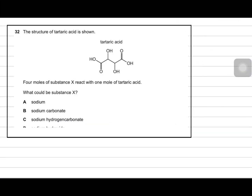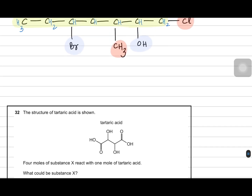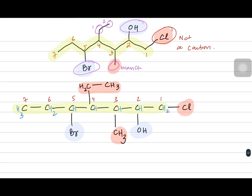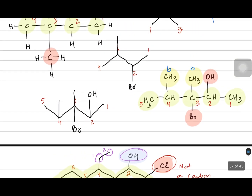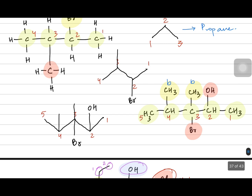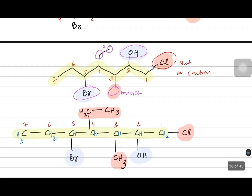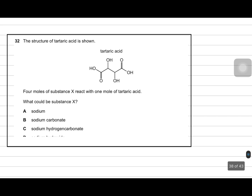Hey everyone! In the last video we were talking about the skeletal formula and we saw how it could be used to write the structural formula. We saw that the functional groups should be written completely and that the other carbons and hydrogens of the main alkane chain should not be written. Now let's pick some examples from the past paper questions to see what those skeletal formulas mean.